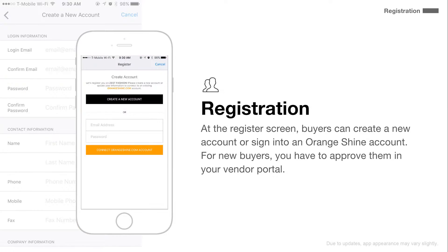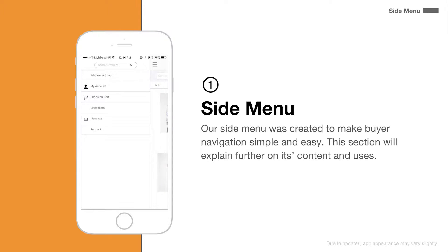At the registration screen, buyers can create a new account or sign into an OrangeShine account. For new buyers, you have to approve them in your vendor portal. Our side menu was created to make buyer navigation simple and easy.